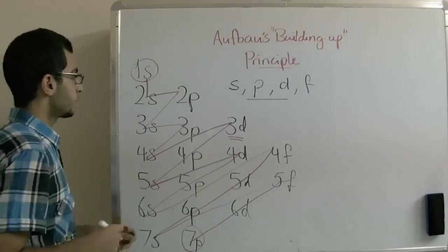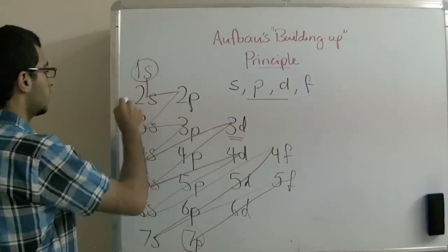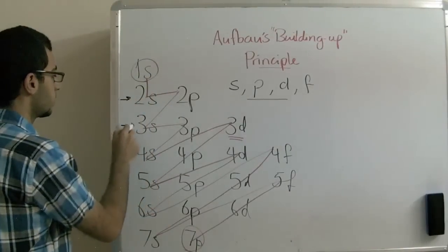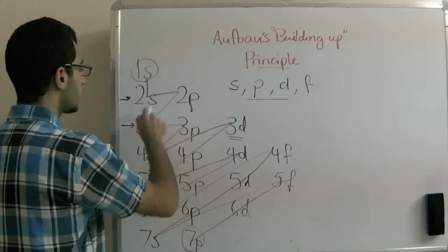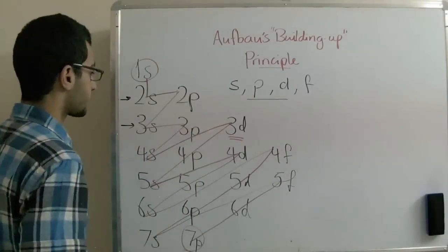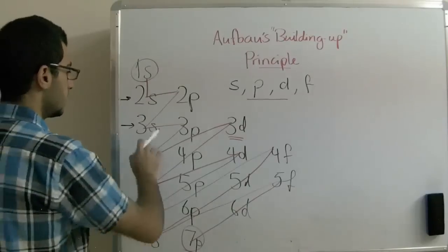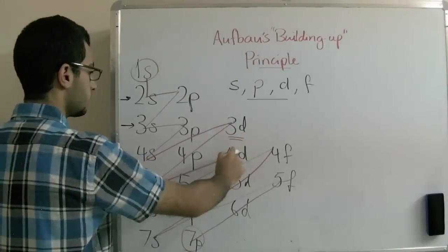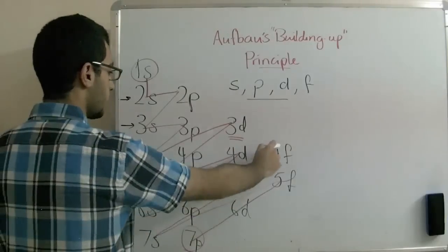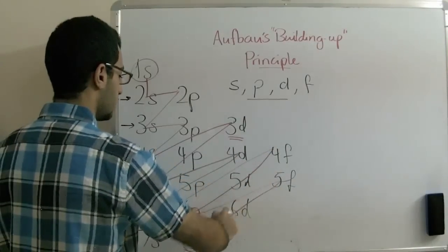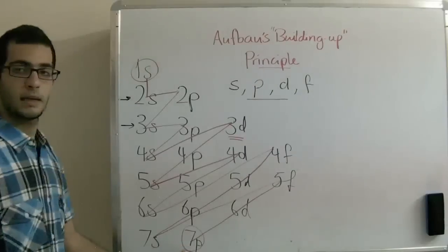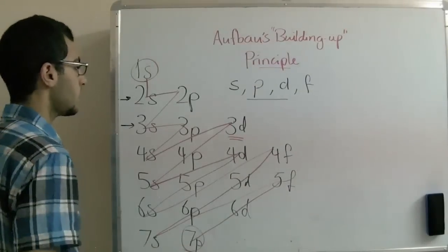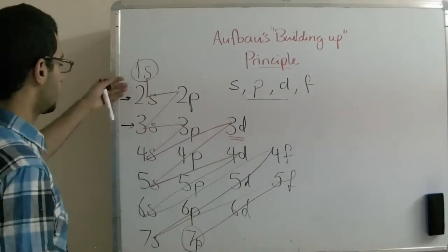So this is the order of the energy levels. Again, in the 2nd and the 3rd rows, we go with a zigzag to the 2nd element. And then here, we return to the 3rd, then to the 4th, then to the 5th, and it lasts like that. This is the order of the energy level.